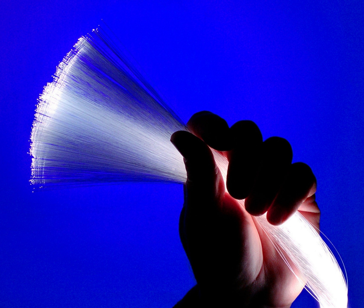ITU-T G.hn technology uses existing home wiring—coaxial cable, phone lines, and power lines—to create a high-speed local area network.